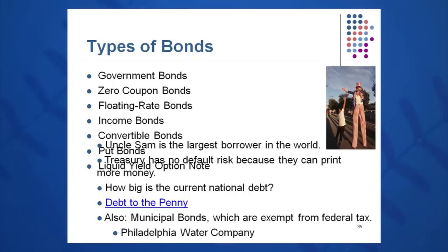Other government entities also issue bonds. Municipal bonds are very, very popular. Why? Because they can be triple tax-free if purchased in the state of residence. So if you live in Pennsylvania and you buy a Philadelphia Water Company bond — my wife's grandfather used to favor these bonds because they were triple tax-free: federal tax-free, state tax-free, and local tax-free. He loved them, and at the time he purchased them, they were paying a very attractive rate of interest.